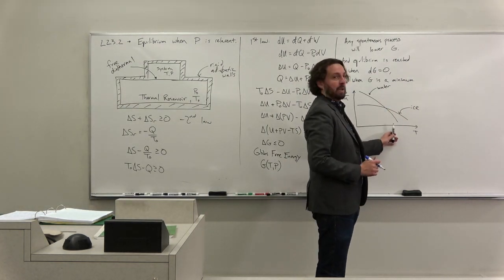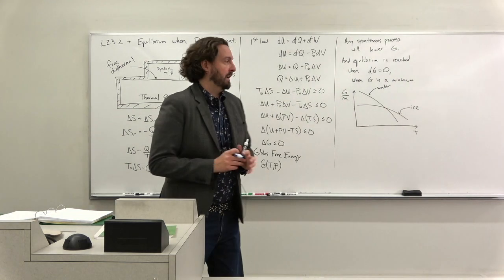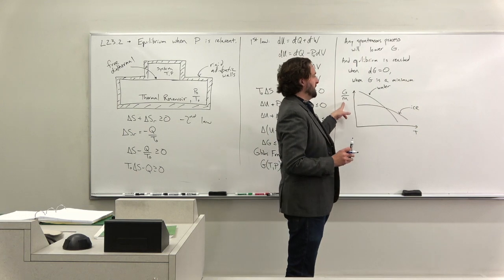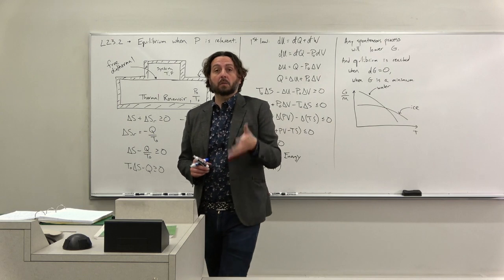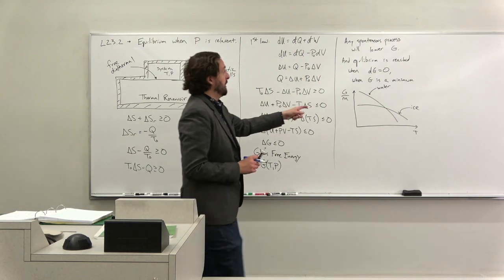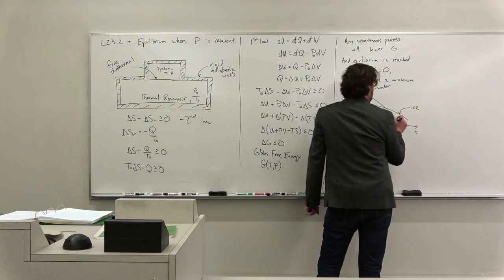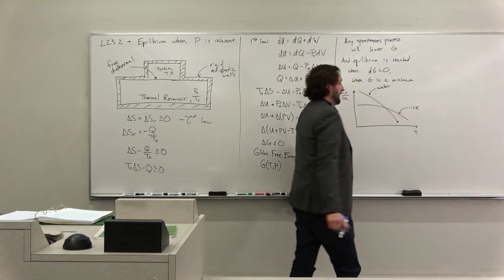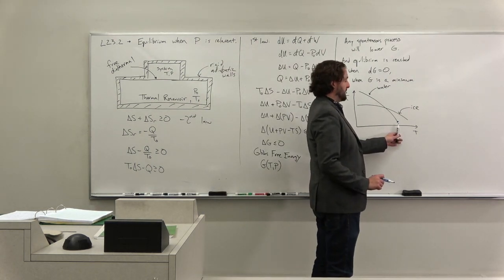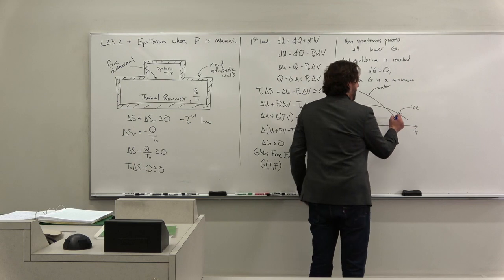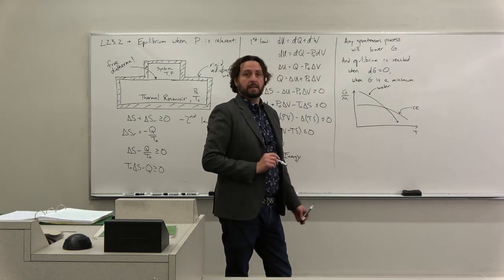So imagine that I am in some system. So at any particular temperature, I need to ask what state will my system be in? So if I have these Gibbs free energy intrinsic as a function of temperature, I can tell you what it should be in. Because we know that we should always be in the lower G. So at some temperature, I'll always be in the lower curve. So at high temperatures, you can see that we are going to be in the water state.